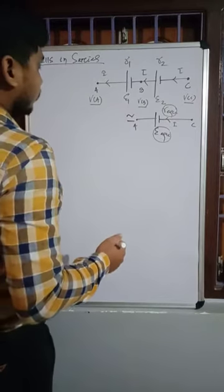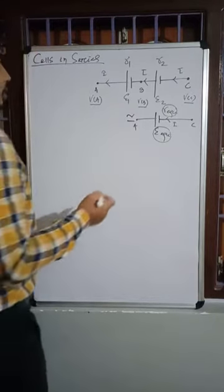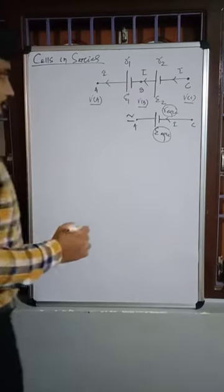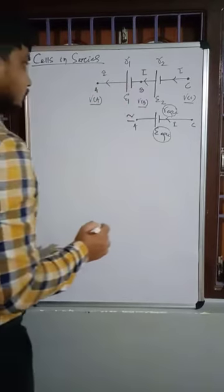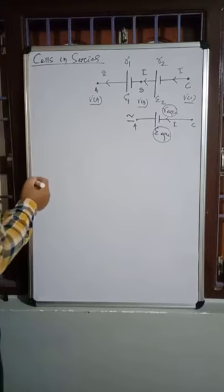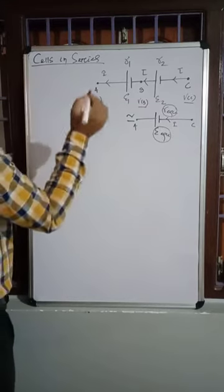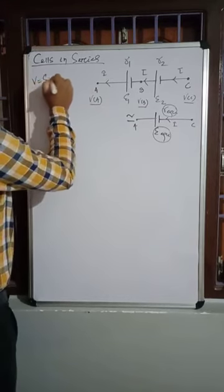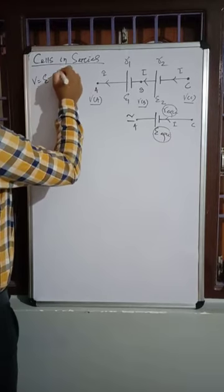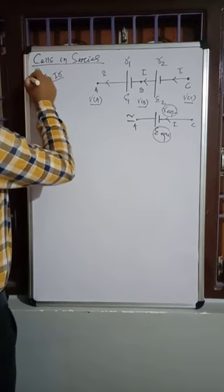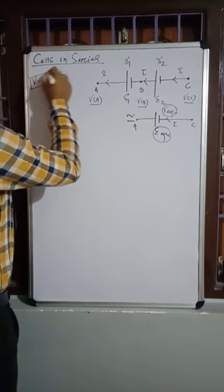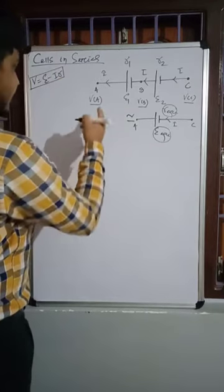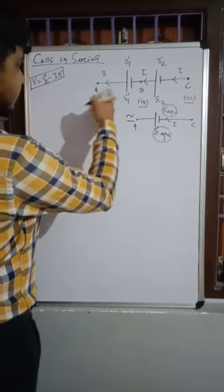Step by step we will find out the equivalent EMF and equivalent resistance, which will be the internal resistance. Let us first recall the important relation we have already derived: V equals E minus IR. This relation is very, very important.